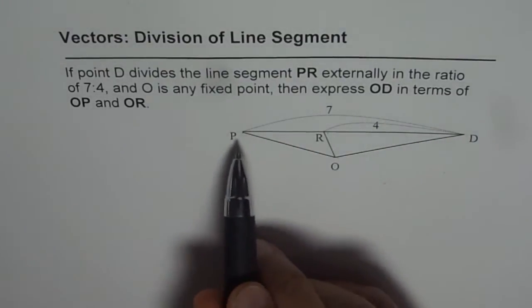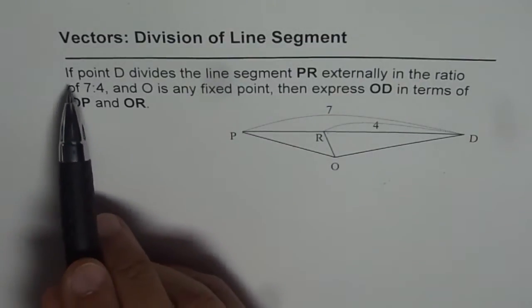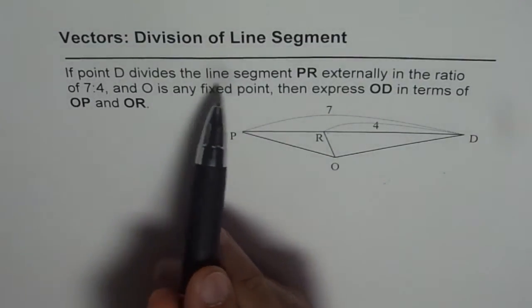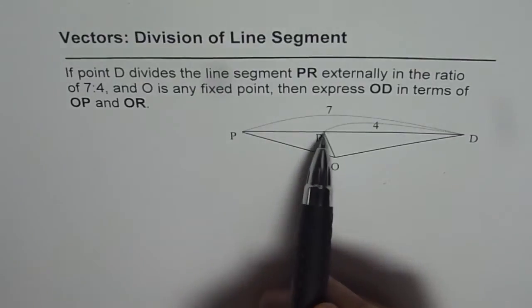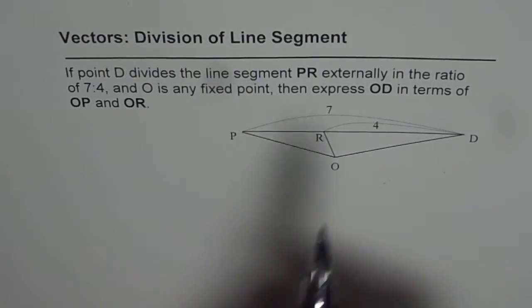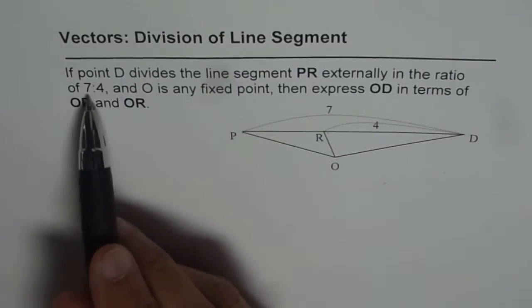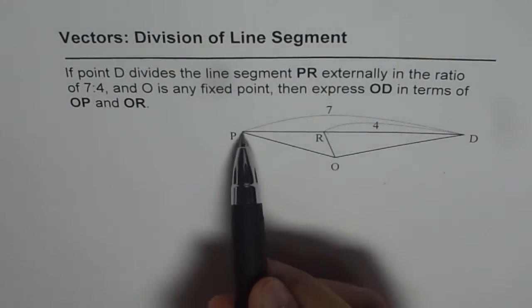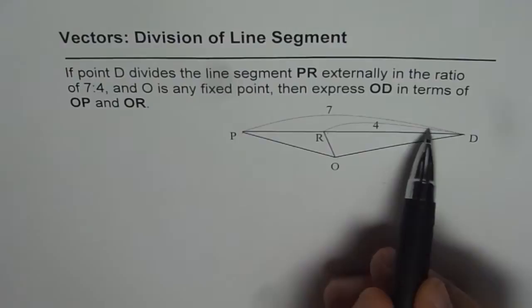Now, keep an eye on this diagram. It says, if point D divides line segment PR externally, so PR line segment extended and D is your external point, in the ratio of 7 is to 4, so that is 7 and this is 4.